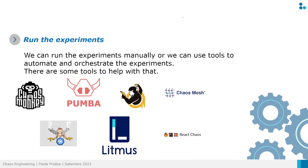We can run these experiments manually — for example, manually accessing our environment and killing a container, closing a connection, or cutting the power. But we can also use tools to automate and orchestrate the experiments. Here are some tools available on the market, and most of them are open source — available on GitHub or the tool's site — making them easier to study and understand.